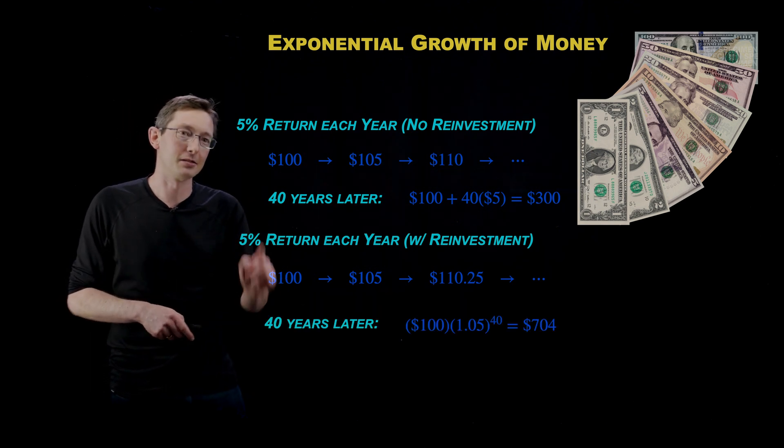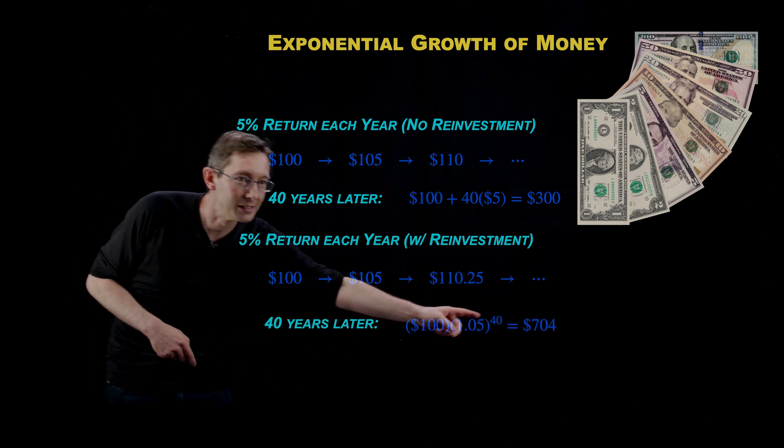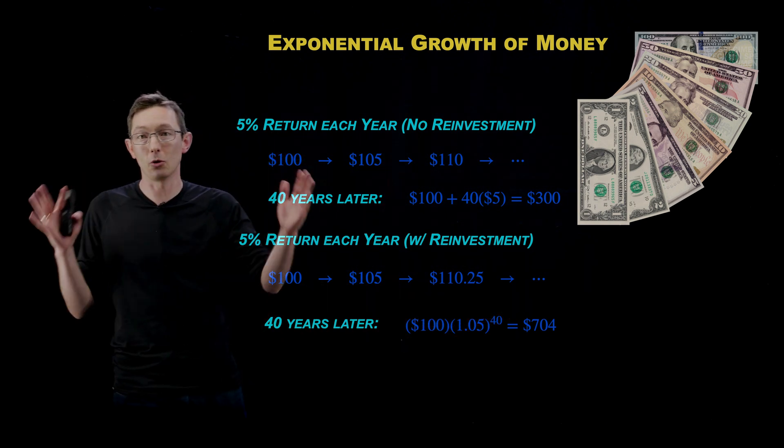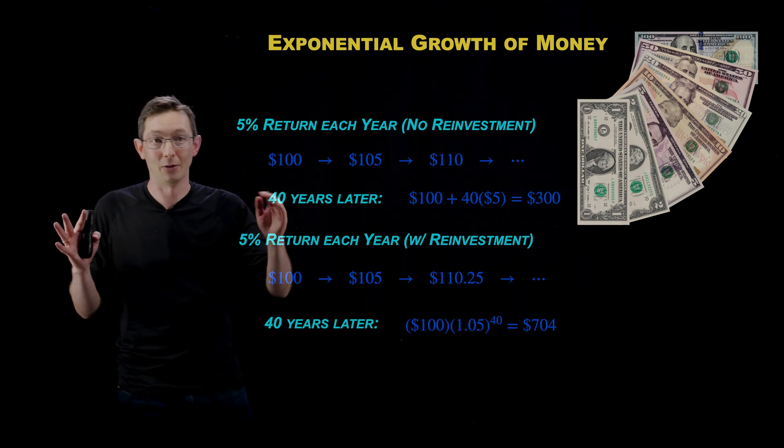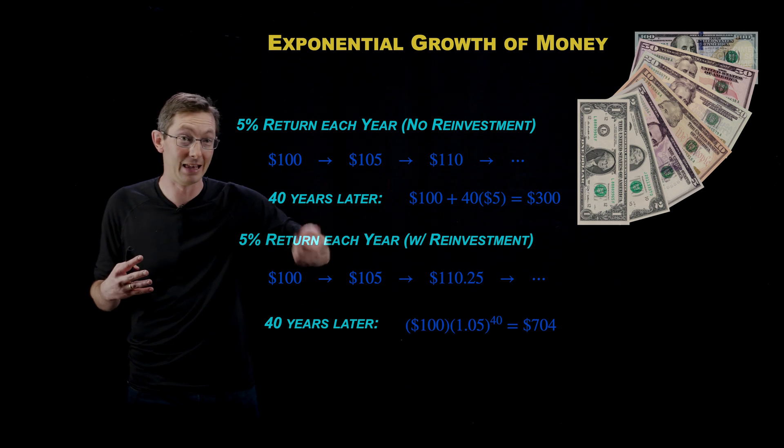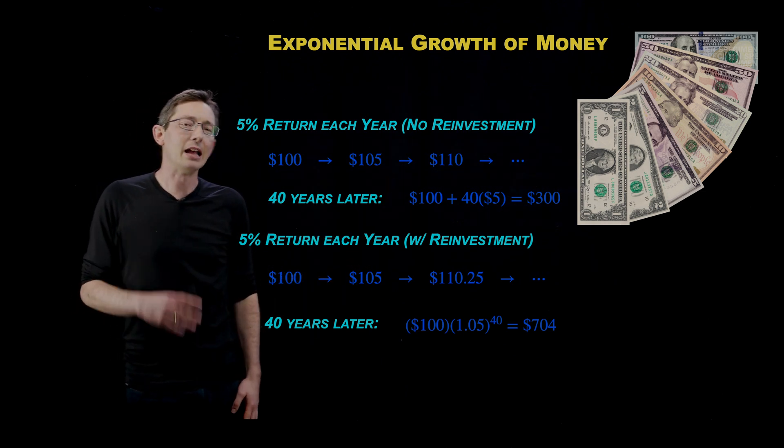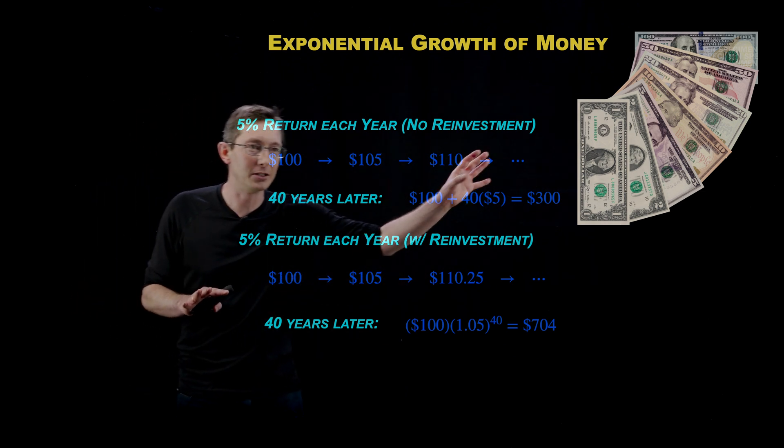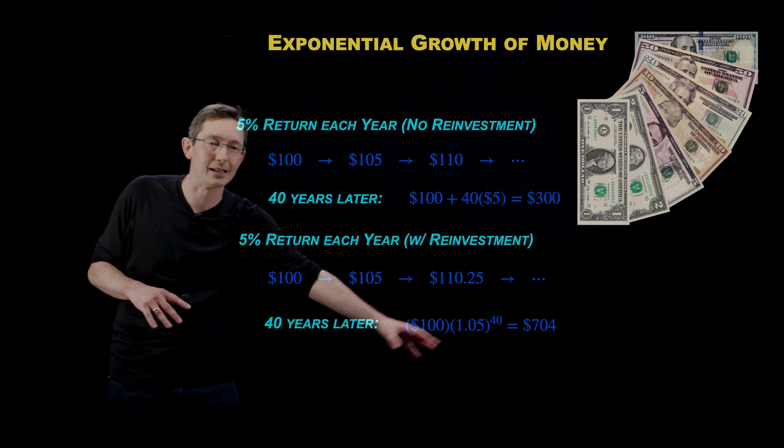Over 40 years, what I'll get is $704 total dollars in my bank account if I reinvest that 5% every year. And so that's pretty remarkable. If I don't reinvest, I get $300. If I do reinvest,